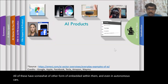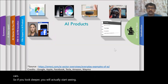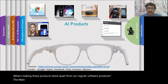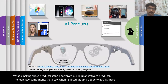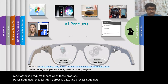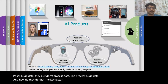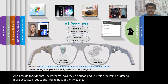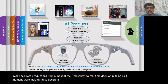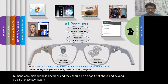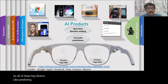So if you look deeper, you will actually start seeing what's making these products stand apart from regular software products. The main key components I saw when digging deeper were that these products possess and process huge data. And how do they do that? The key factor is they use this processing of data to make accurate predictions. In most cases they do real-time decision making as if humans are making those decisions — and they should be on par if not above and beyond. These key factors — predicting and taking accurate decisions — are what defines these products as AI products.